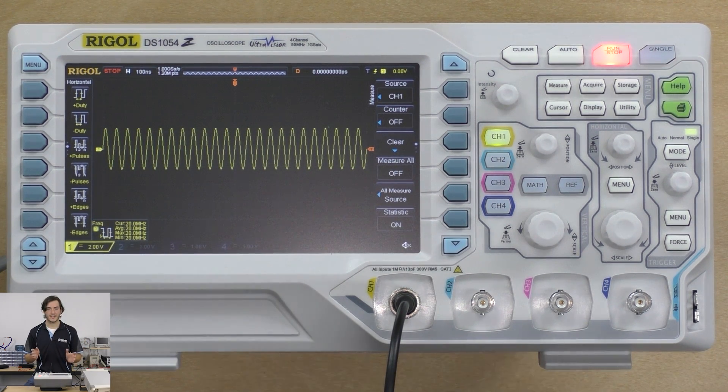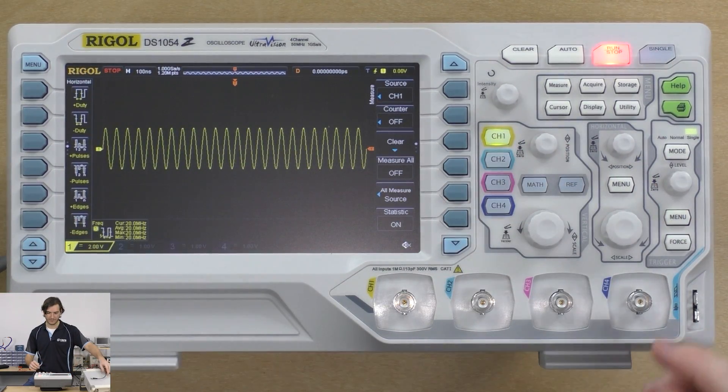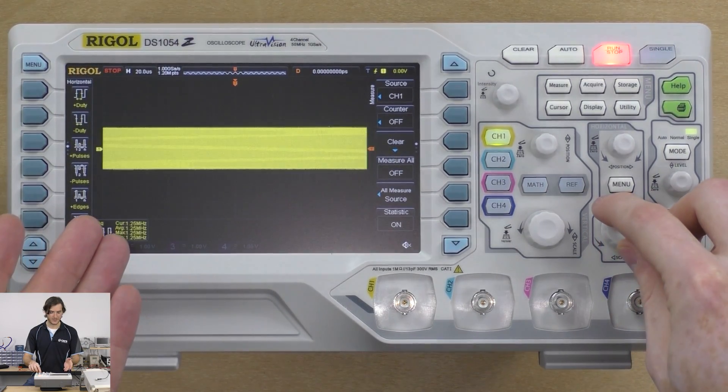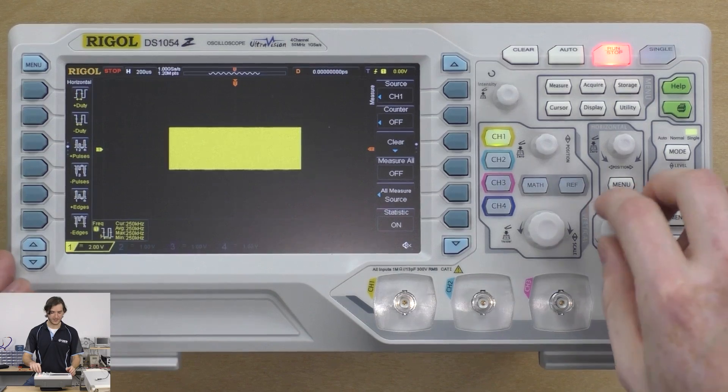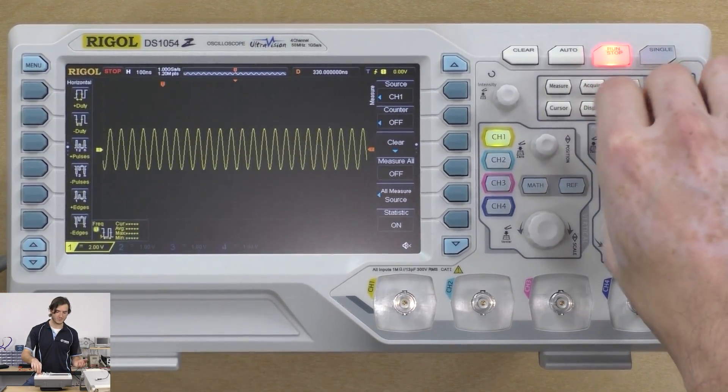Just to reiterate, what we're looking at is actually a captured signal. I can remove the measurement probe from the scope, you can see the waveform is still there. This is a waveform we captured in single shot mode and it's now saved in memory so we can zoom in and pan around.